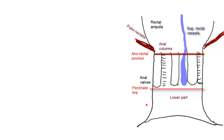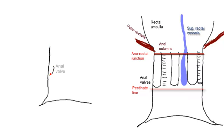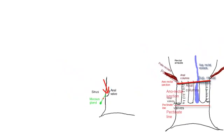The pectinate line means comb-shaped. Looking at the anal canal from a side view, you can see one of these valves from the side. Behind each valve there is a sinus, into which mucus glands open. These glands exude mucus when compressed by feces.